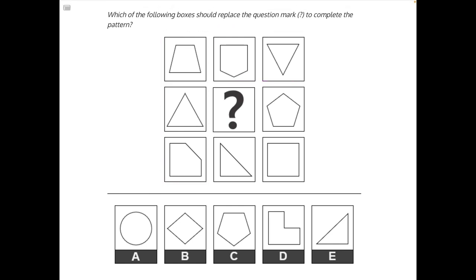If we look at our first row, we see that we have a shape of four sides, five sides, and three sides. If we look at the other full row that we have, we have a shape of five sides, three sides, and four sides.